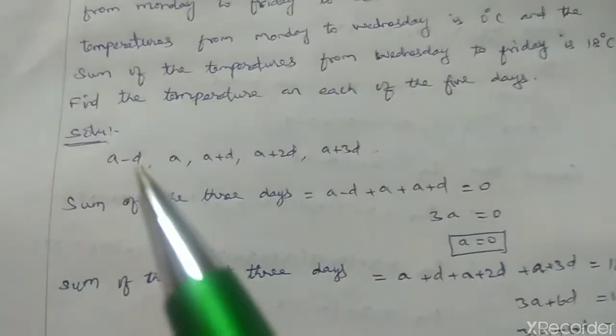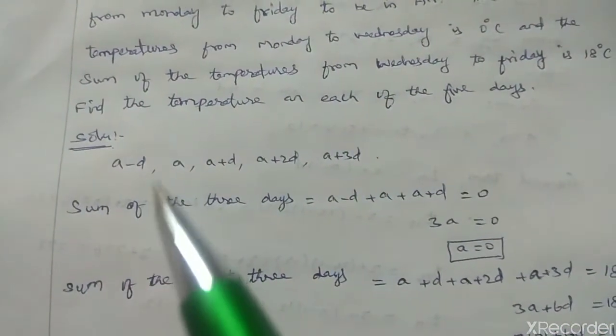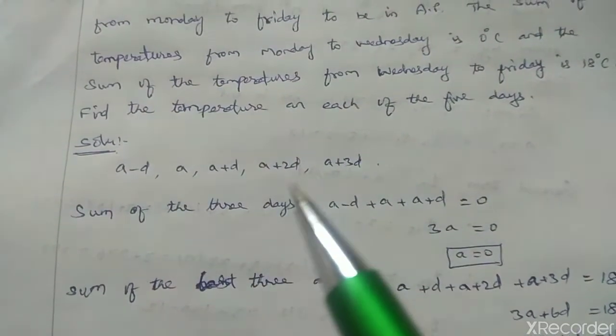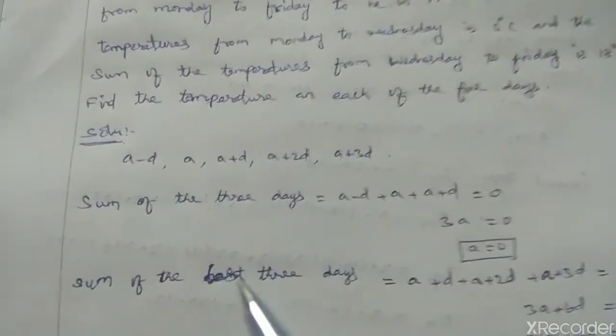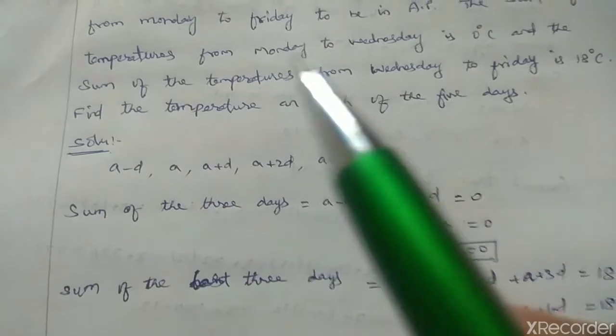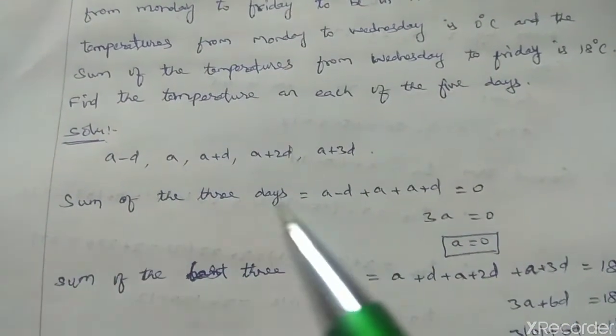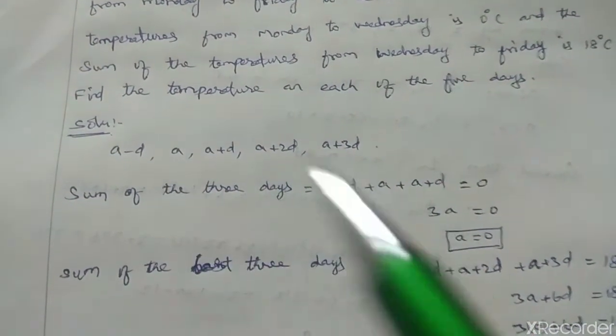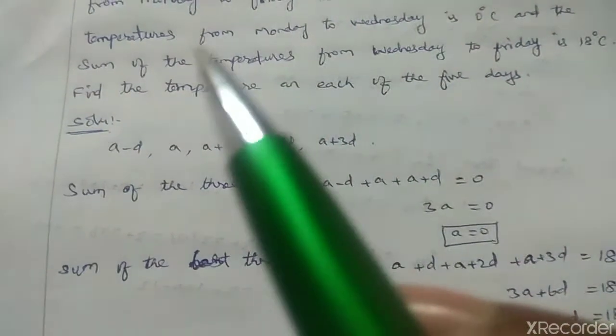Solution. The AP will be a minus D, a, a plus D, a plus 2D, a plus 3D. First, Monday to Wednesday. Sum of the 3 days equal to a minus D plus a plus a plus D equal to 0 degrees.